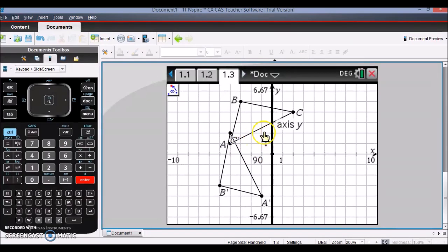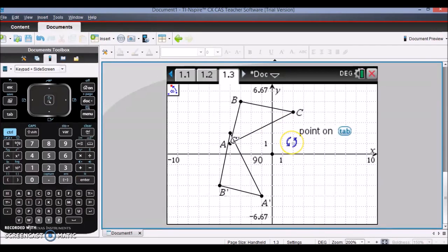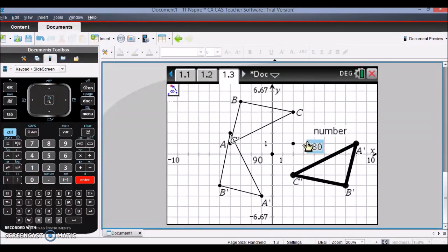I could also use a rotation around a point besides the origin. So let's say I use the point 2, 1. Then when I type in the degrees I want, let's say 180 degrees, I can also have a rotation around a point besides the origin.